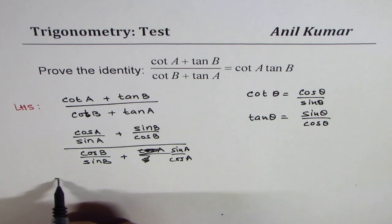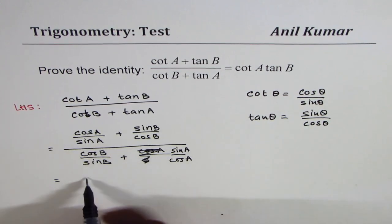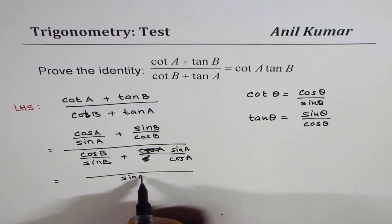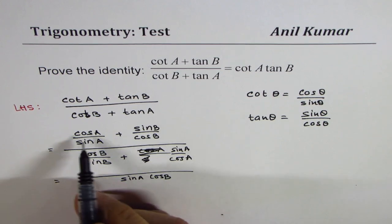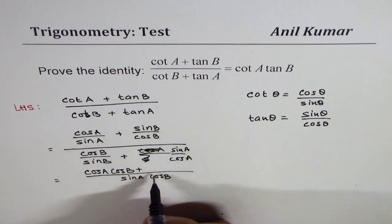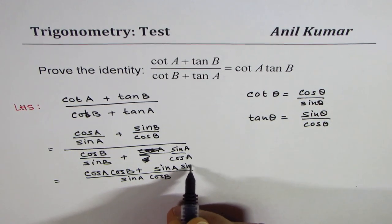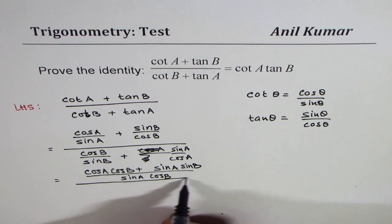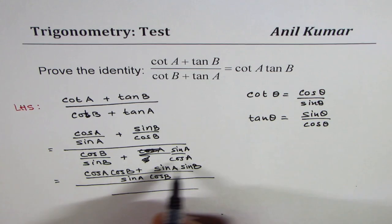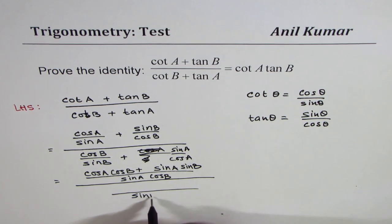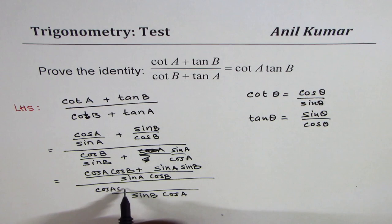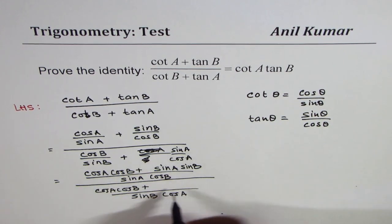Now at this stage we can take common denominators. In the numerator, the common denominator is sin A cos B. When you cross multiply, you get cos A cos B plus sin A sin B. In the denominator, we again take the common denominator, which is sin B cos A, and when you cross multiply you get cos A cos B plus sin A sin B.